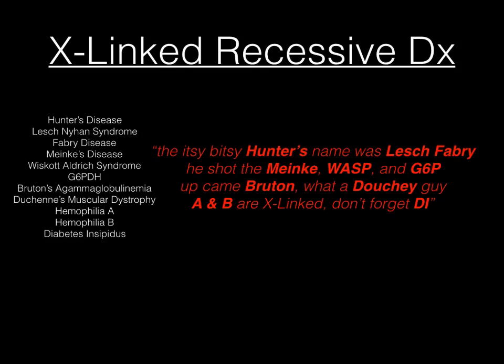Wasp is Wiscott-Aldrich syndrome — the mutated protein is called the WASP protein, so that's a good fact to know. G6P is glucose-6-phosphate dehydrogenase deficiency. Bruton is Bruton's agammaglobulinemia. Douchey is Duchenne's muscular dystrophy — you've got Douche, Duchenne's, Douchey, pretty much identical. A and B are hemophilia A and B, and DI is diabetes insipidus.